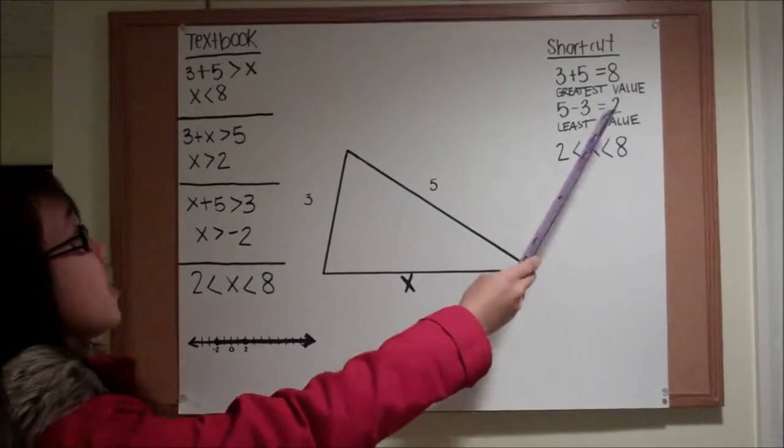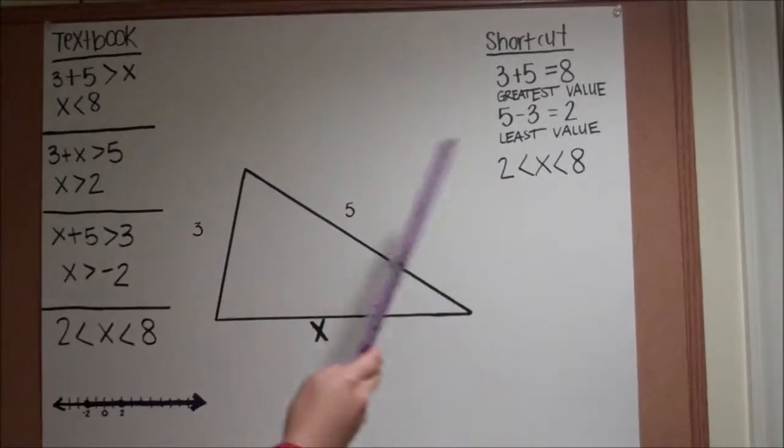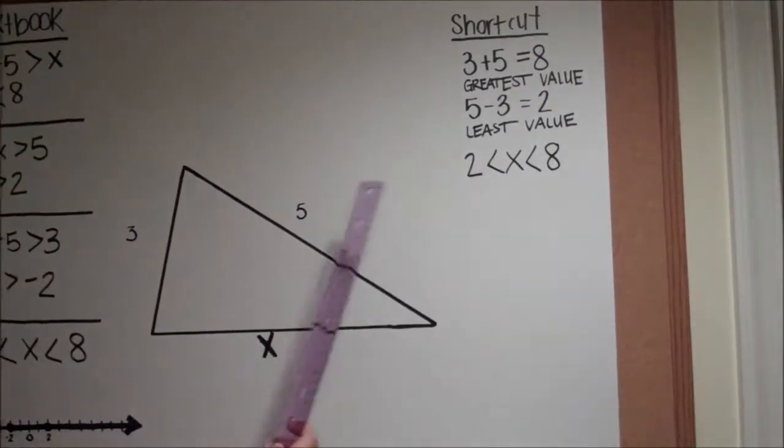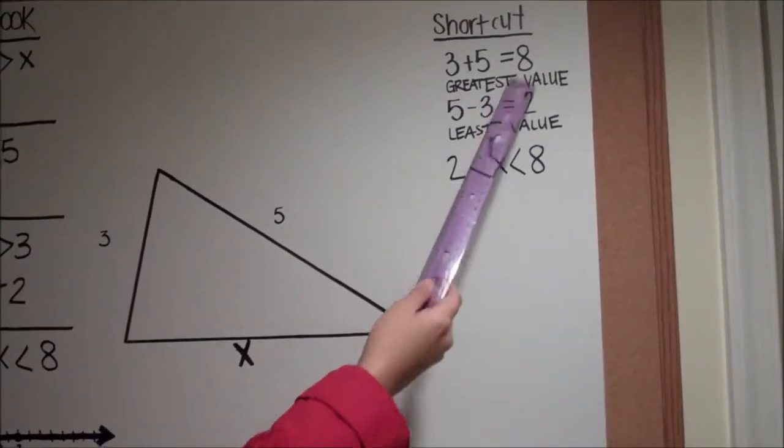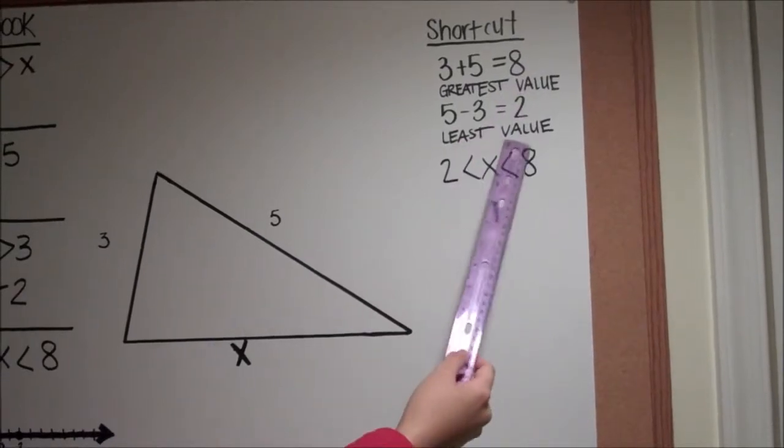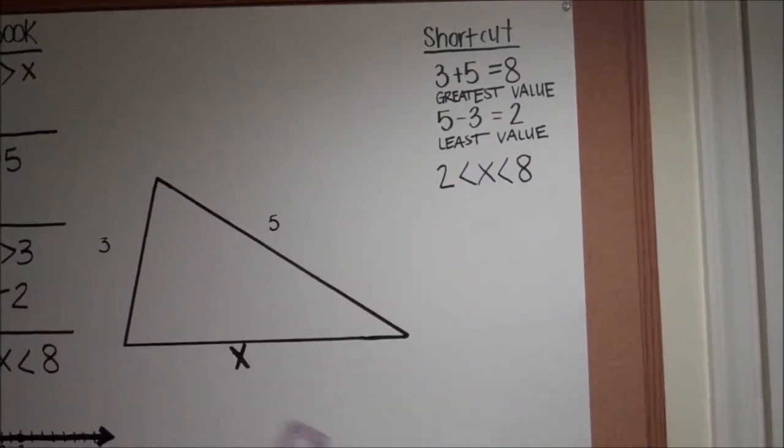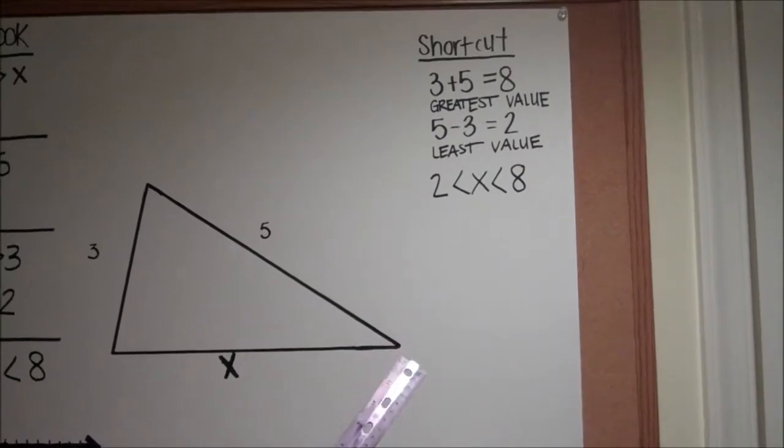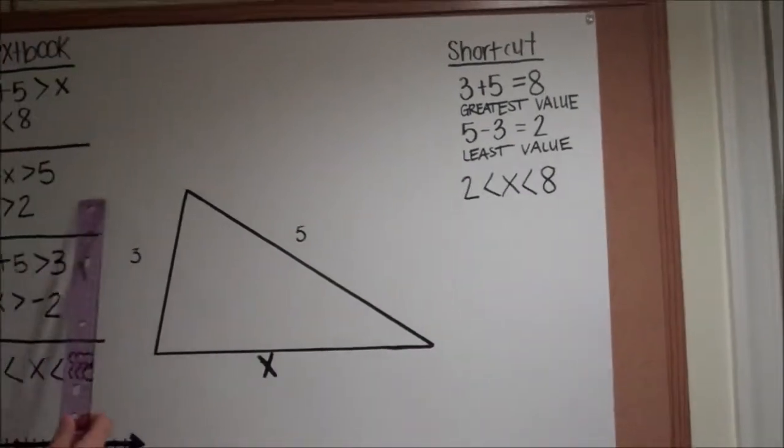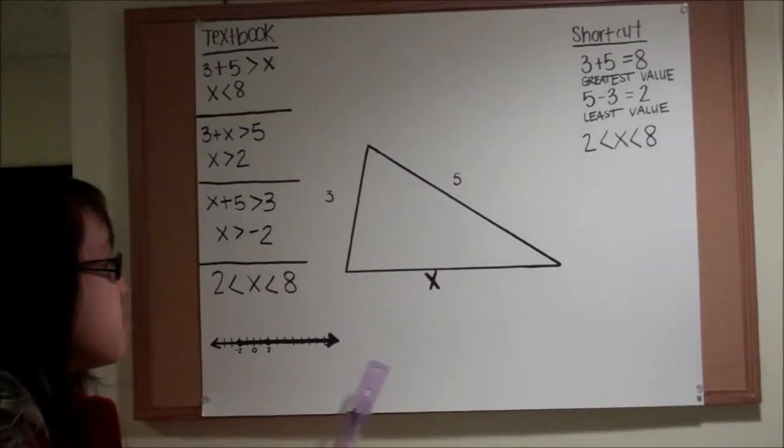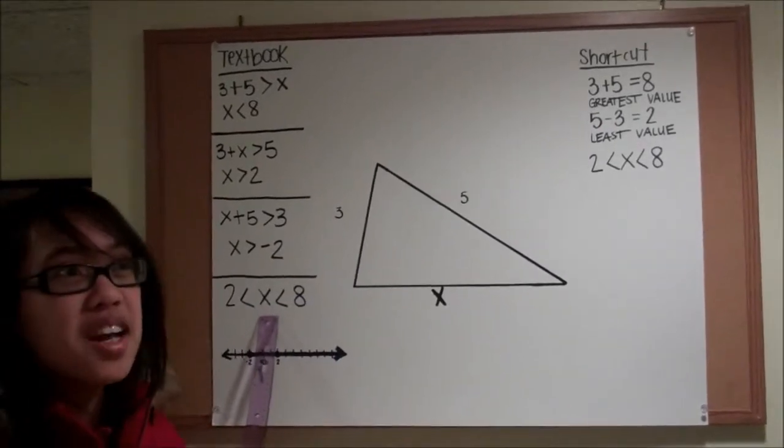And then there's a shortcut over here. You would just add the two numbers that you have and then subtract them. So 8 would be the greatest value, and then 2 would be the least or the lowest value. It's basically doing the same thing you would do over here. So that's the final answer for the range for X.